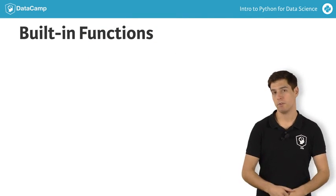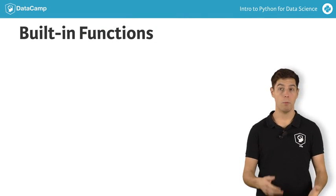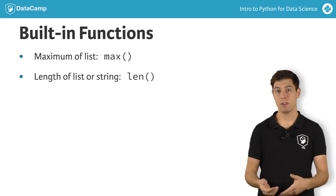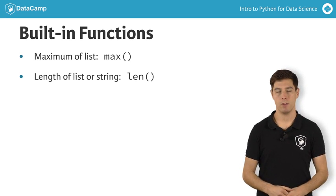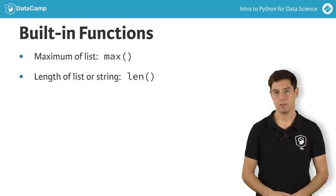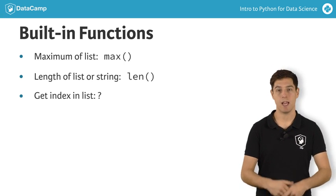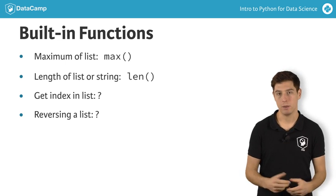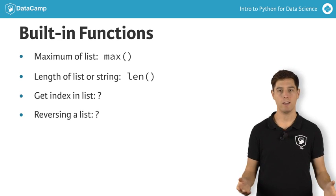Built-in functions are only one part of the Python story. You already know about functions such as max to get the maximum of a list, length to get the length of a list or a string, and so on. But what about other basic things, such as getting the index of a specific element in the list, or reversing a list? You can look very hard for built-in functions that do this, but you won't find them.